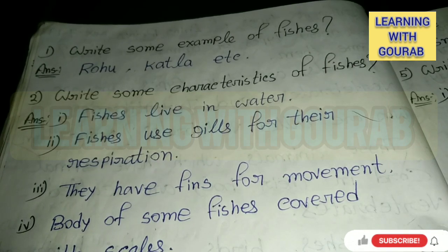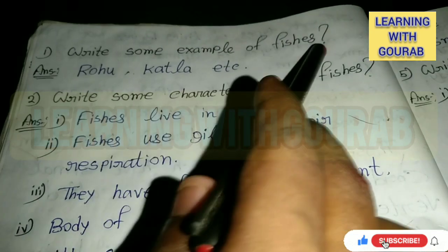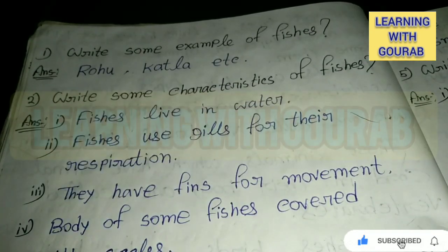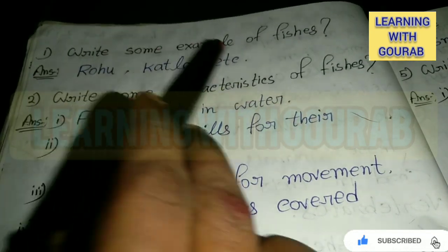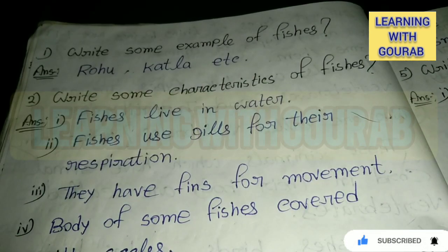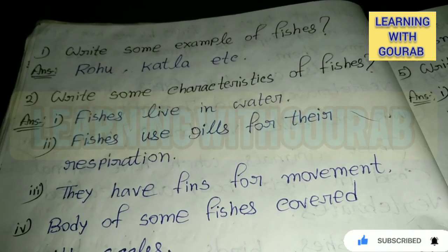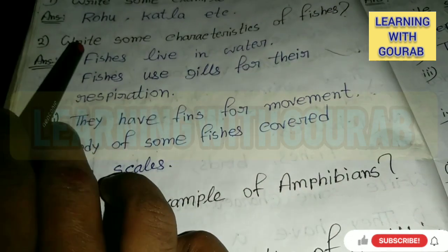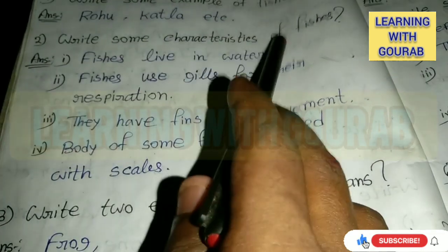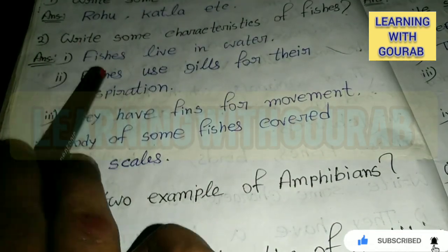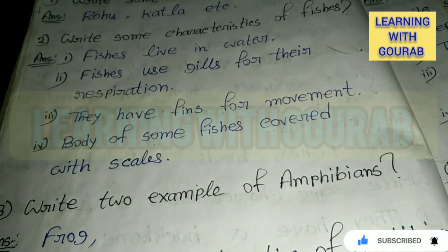Next question: Write some examples of fishes. Answer: Rohu, Katla, etc. Next question: Write some characteristics of fishes.